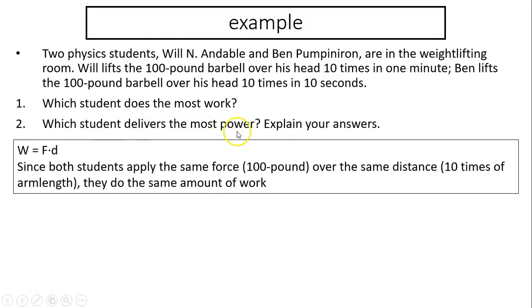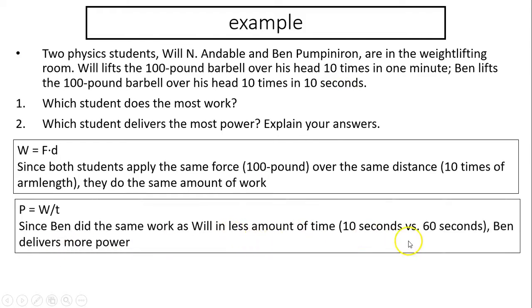Now which one delivers the most power? The one who used less time delivers most power. Ben Pumpingiron only used 10 seconds, so Ben has more power because he used less time to do the same amount of work.